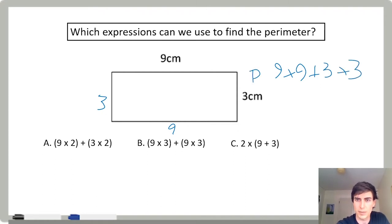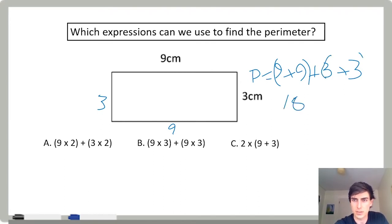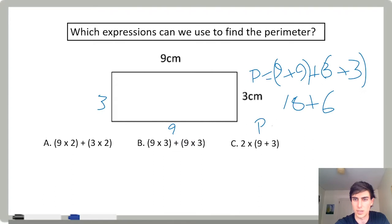Let's say P for perimeter equals. Nine plus nine is 18, plus three plus three — three plus three is six — so 18 plus six. Perimeter equals 24 centimeters.